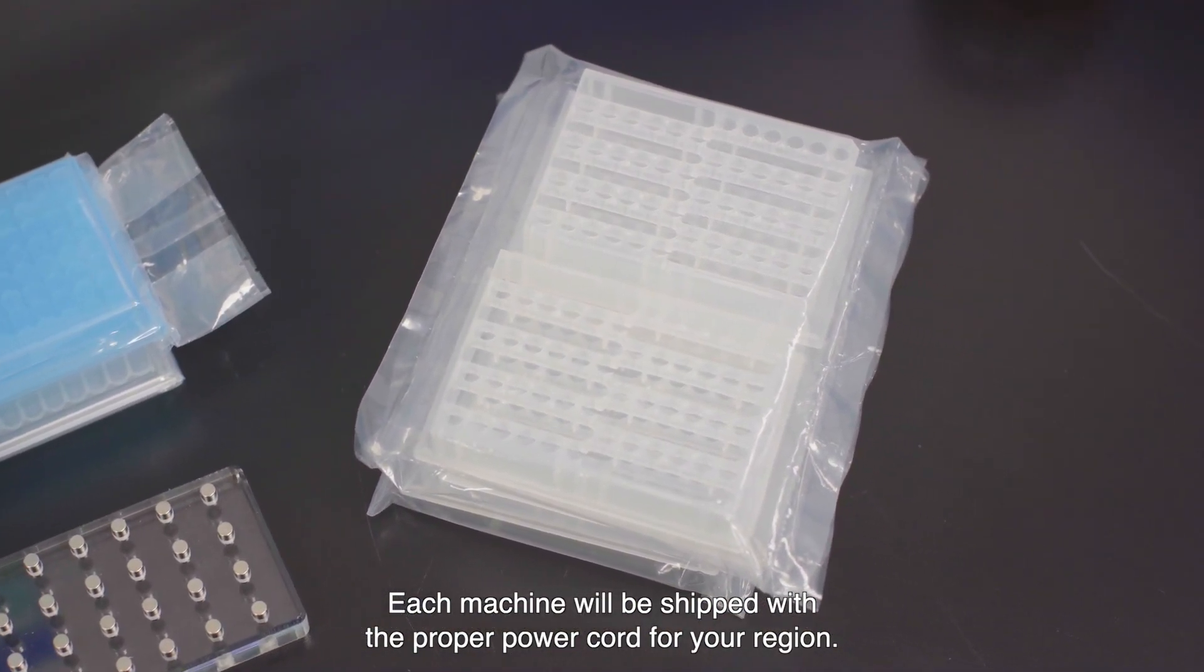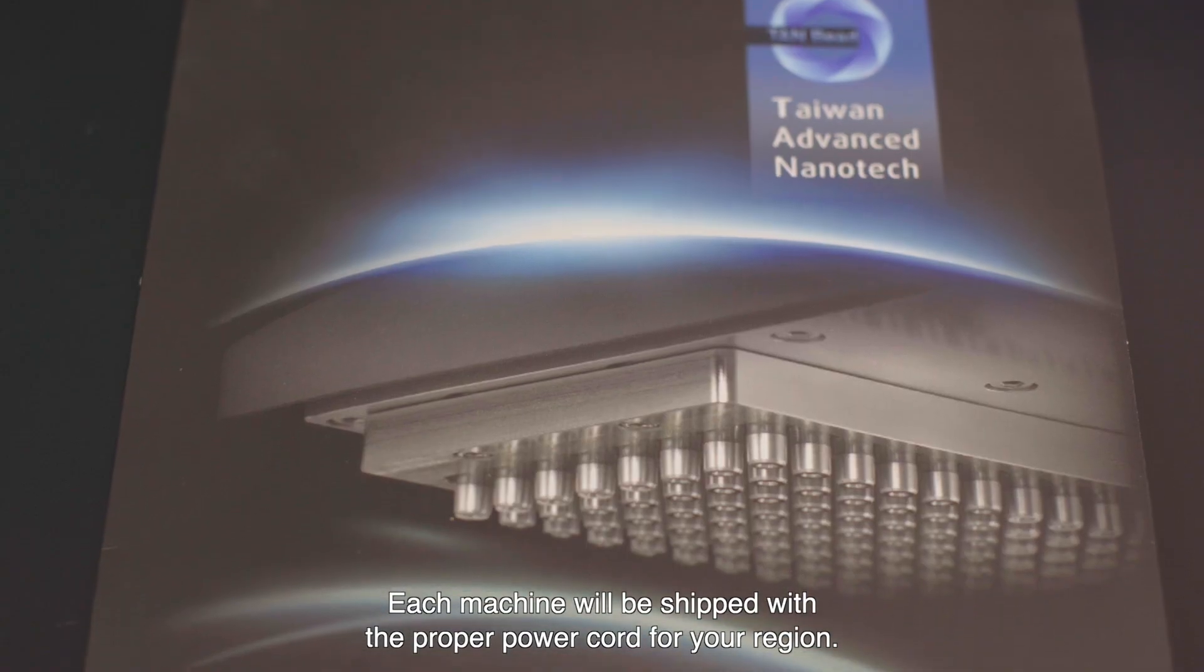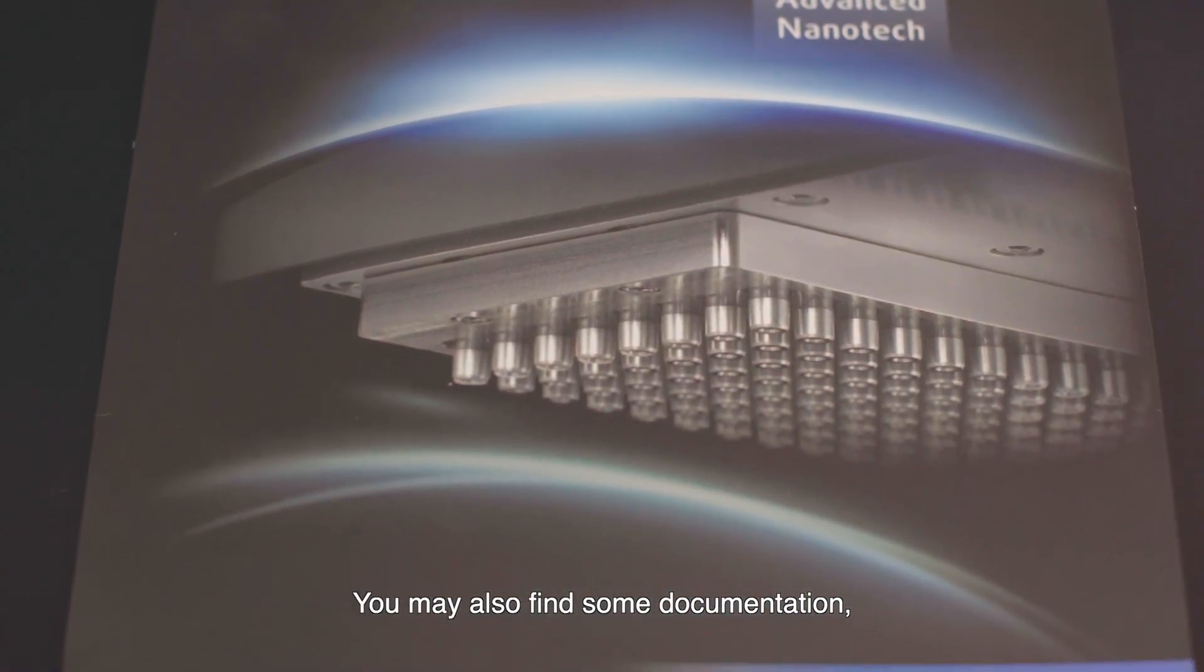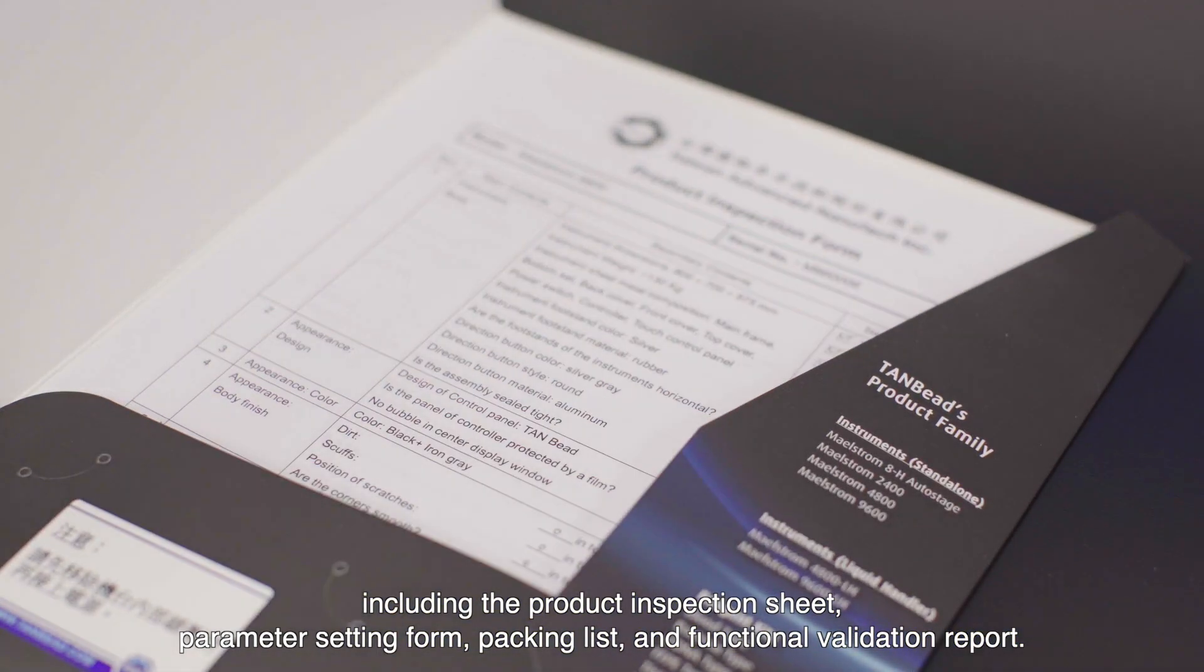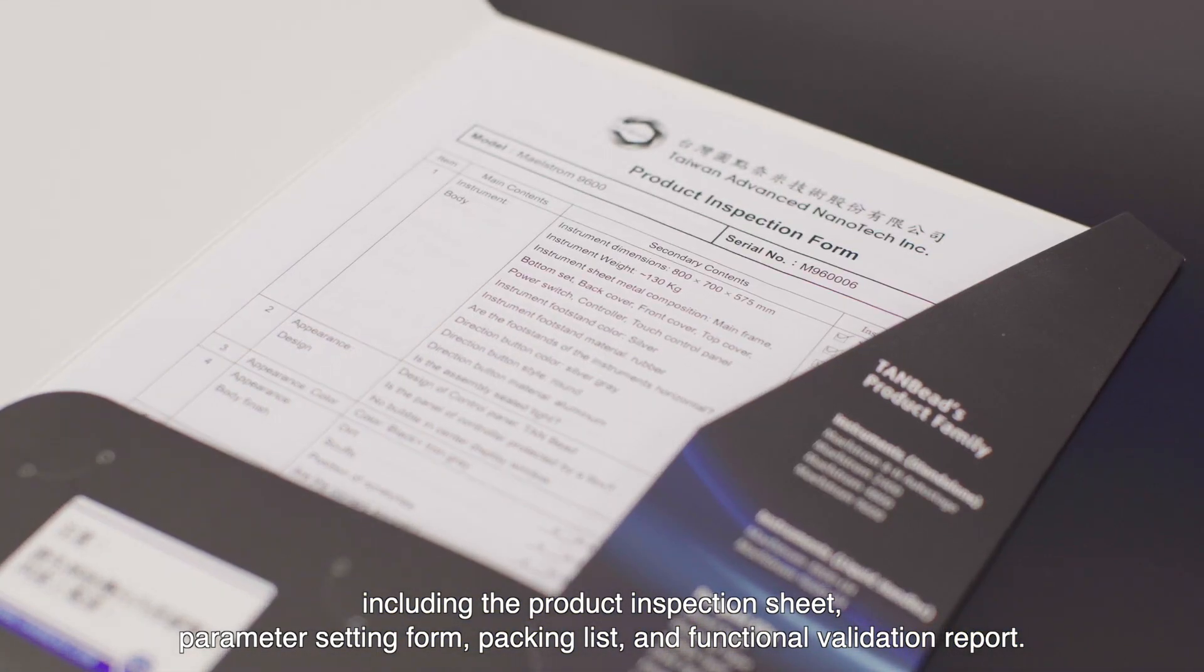Each machine will be shipped with the proper power cord for your region. You may also find some documentation including the product inspection sheet, parameter setting form, packing list and functional validation report.